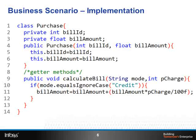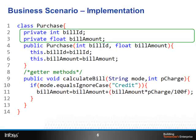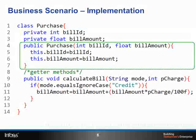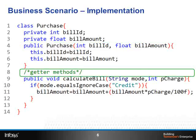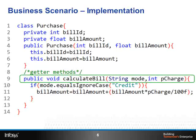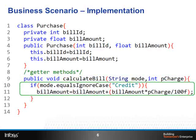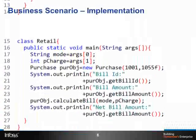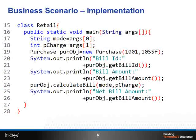Consider that two classes have been written for the retail application domain: the Purchase class and the Retail class. The Purchase class contains two instance variables: bill ID and bill amount, along with a constructor for initializing them. It also contains a calculateBill method which takes two arguments — mode for mode of payment and pCharge for processing charge percentage. If the mode of payment is credit, then processing charge is added to the bill amount; otherwise there is no change to the bill amount.